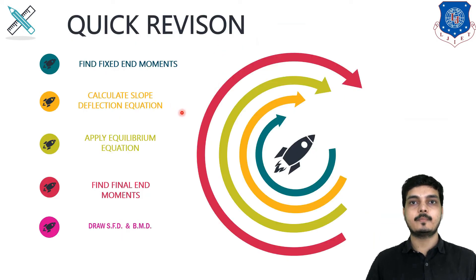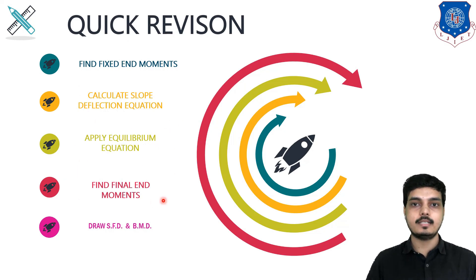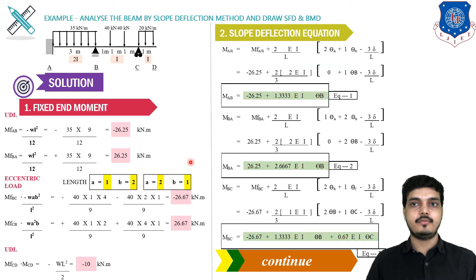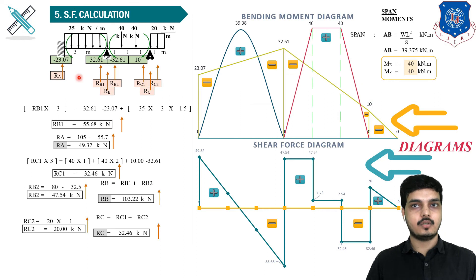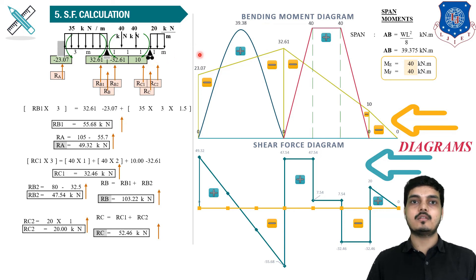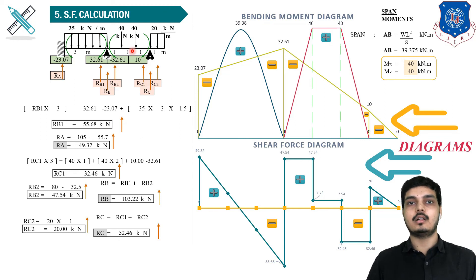Quick revision: we found FEM, then slope deflection equations, applied equilibrium equations, found final moments, performed shear force calculation, and drew the shear force and bending moment diagrams. This example had an extra cantilever and two eccentric point loads, which introduced small but important changes to the standard procedure. This was Type 3 of the slope deflection method examples.